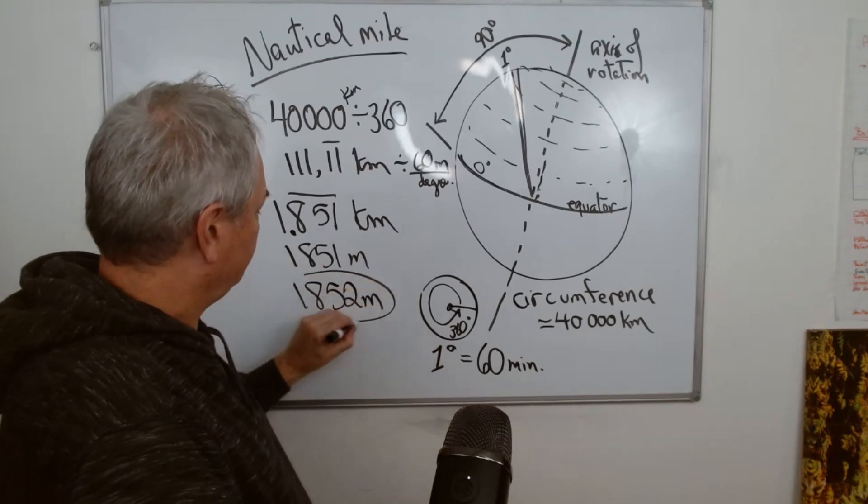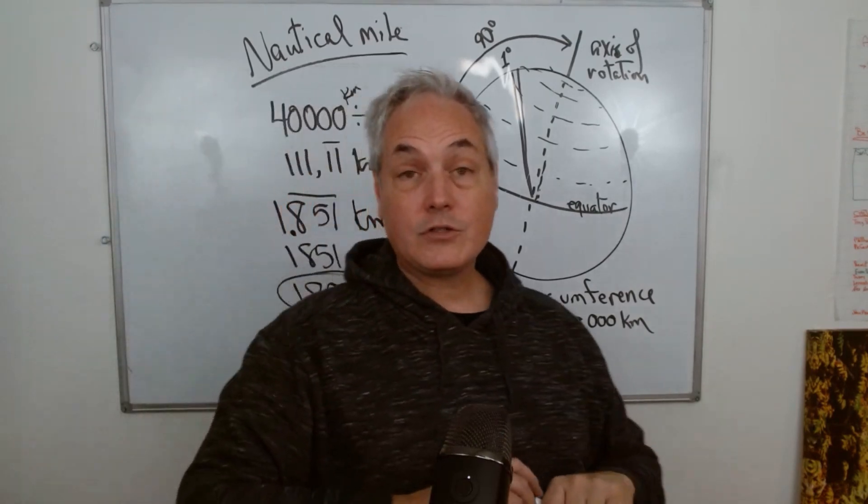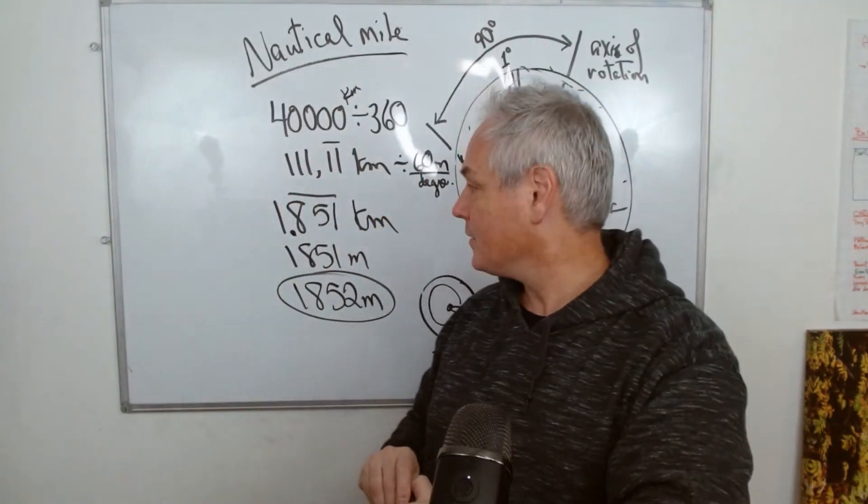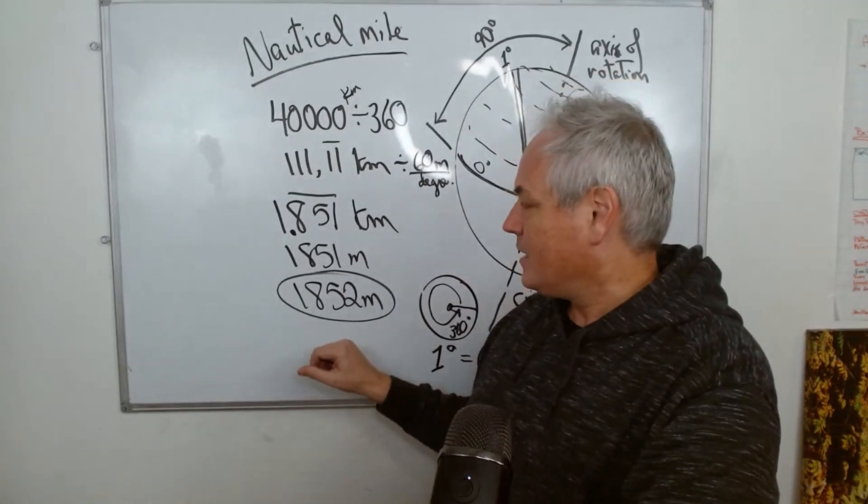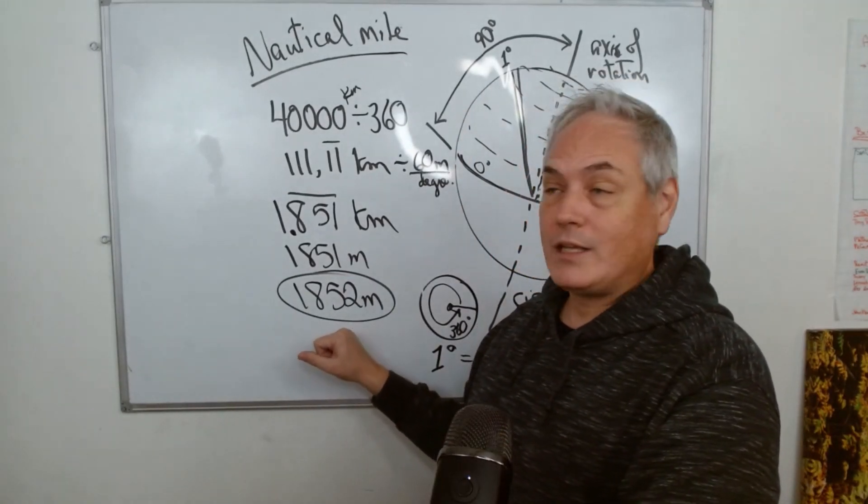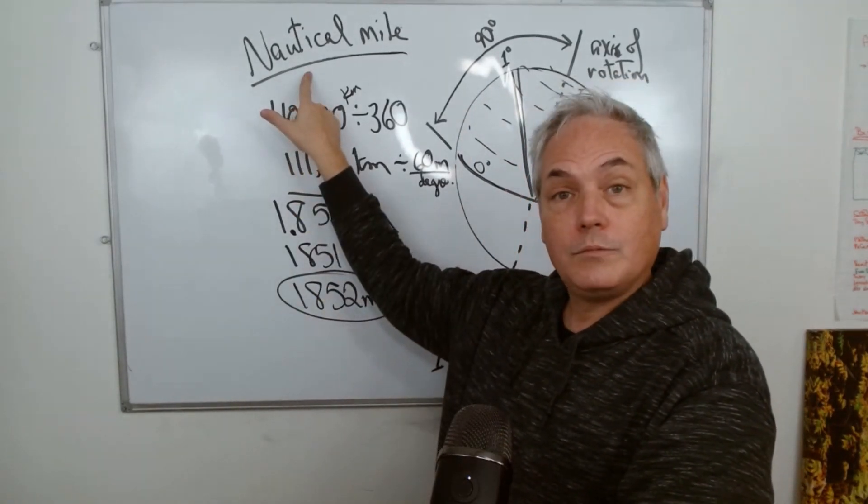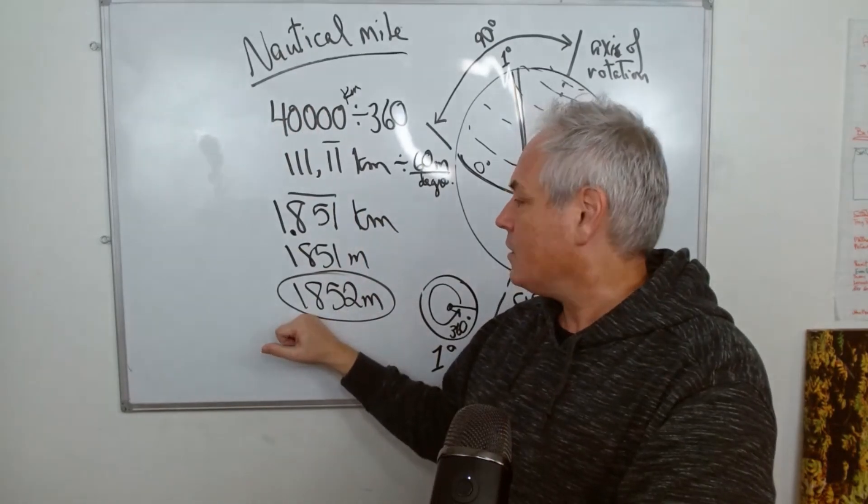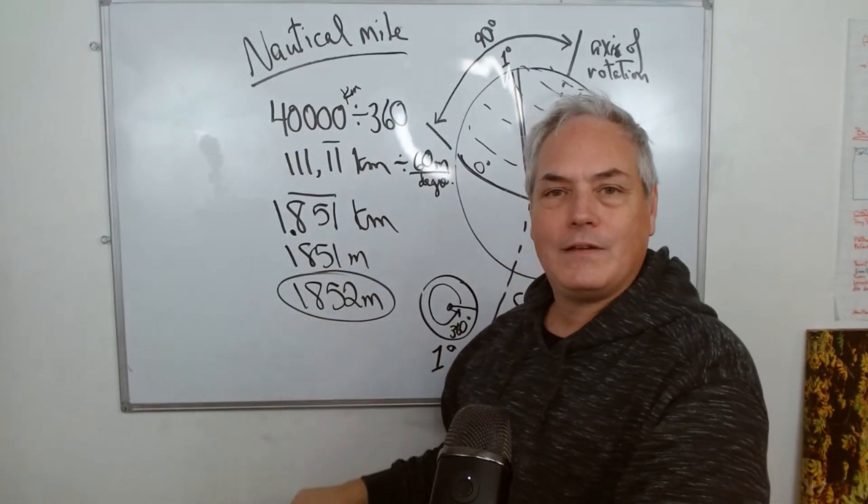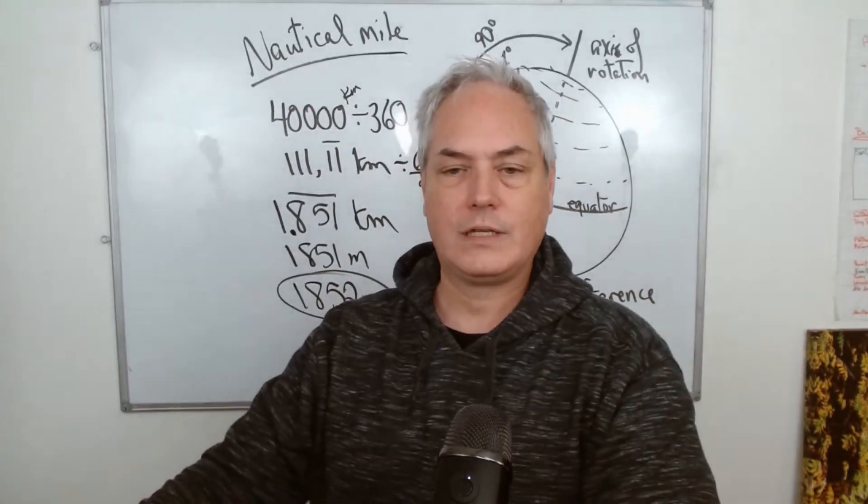From my research, internationally we consider that one nautical mile is 1,852 meters.